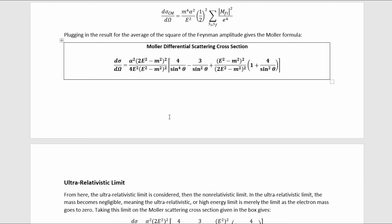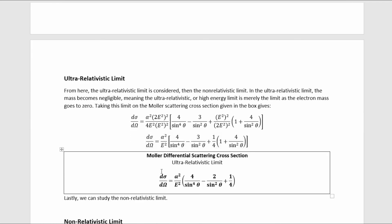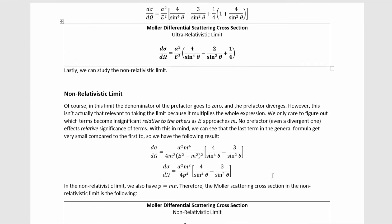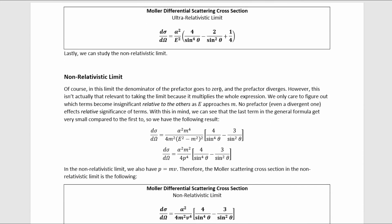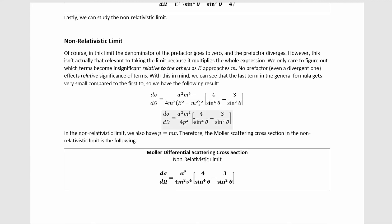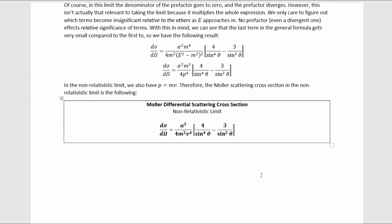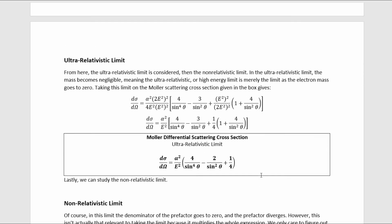If we take the ultra-relativistic limit — the limit where mass goes to zero — we ultimately get this result. Taking the non-relativistic limit: in this limit the denominator of the pre-factor goes to zero and the pre-factor diverges, but this isn't relevant because it multiplies the whole expression. We only care which terms become insignificant relative to the others as E approaches m. With this in mind, the last term in the general formula gets very small compared to the first two, giving us a simplified result. Using the non-relativistic relation p = mv simplifies it further, and that completes our analysis of Møller scattering in QED at the tree level.